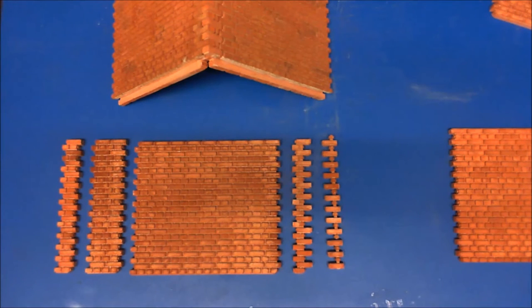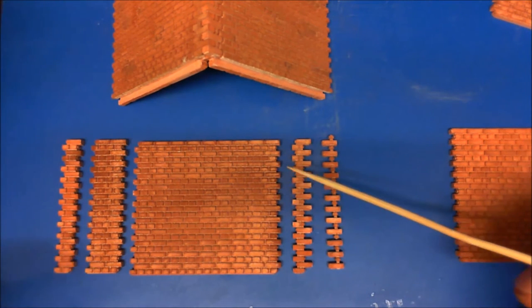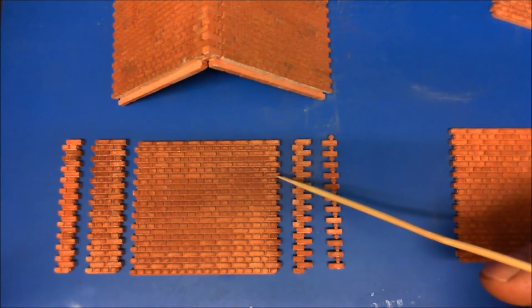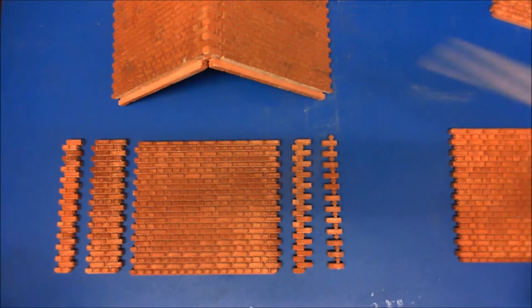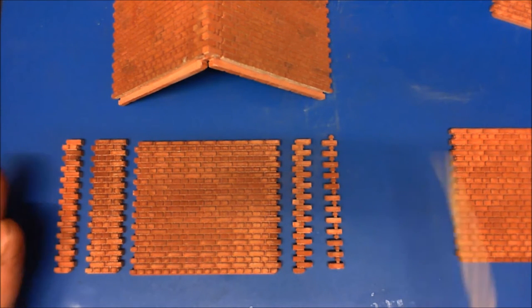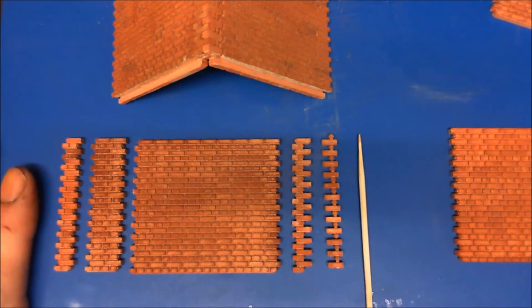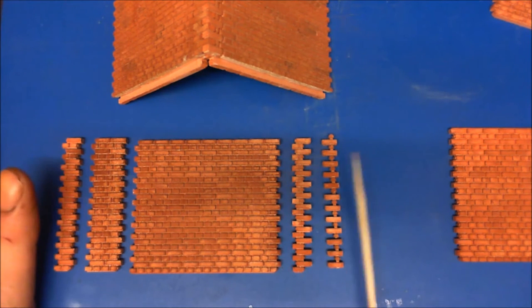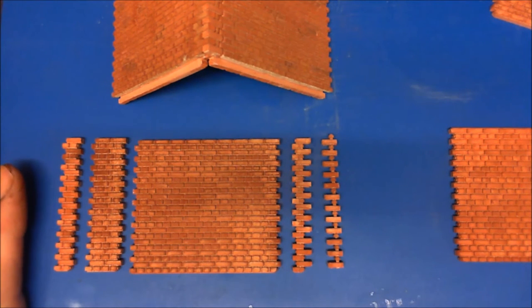Okay, turning a corner in English bond. It's slightly different to the stretcher bond. Because, like I said, it's a totally different bond altogether, because you've got a stretcher and a header. Right, now, what we've got in front of us is one mold - what you actually get in one mold.